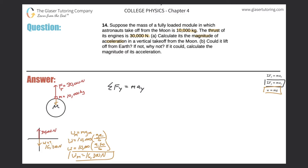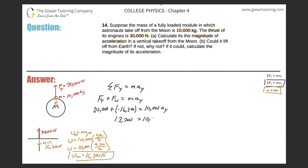Now the sum of all forces: the force of thrust plus the force of weight equals the mass times the acceleration in the y direction. The thrust is positive 30,000 N, and the weight is negative 16,300 N because it points in the opposite direction. That gives us 30,000 minus 16,300 equals 13,700, which equals 10,000 times a_y. Dividing both sides by 10,000, the acceleration in the y direction is 1.37 meters per second squared. That is the acceleration of the ship for part a.